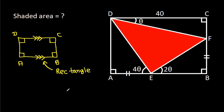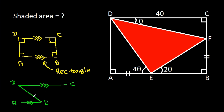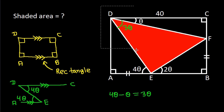Here AE and DC are parallel, and this angle is 4 theta, so this angle will also be 4 theta. We have angle CDF is theta, so this angle will be 4 theta minus theta, that will be 3 theta.